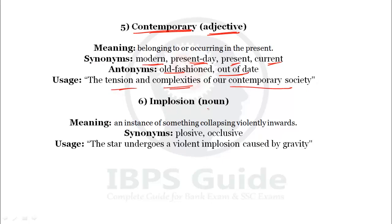Our next word is 'implosion.' Implosion is a noun. Implosion means an instance of something collapsing violently inward. If something suddenly collapses inward, that is called implosion. The root 'plosion' is related to violent action — like explosion, explosive. So synonyms will be plosive and occlusive. Implosion is a violent inward collapse.